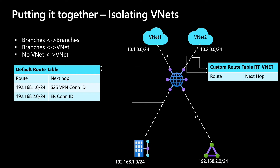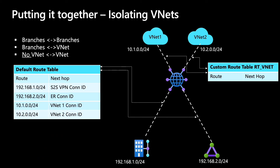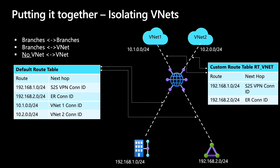Now, the VNets need to be able to reach branches, and the branches need to be able to reach the VNets. The branches are associated to the default route table here. So we will need to make sure that VNets also propagate to the default route table, while the branches also propagate to the custom route table called RTVNet. With a very simple concept of association and propagation, we have managed to isolate VNets.